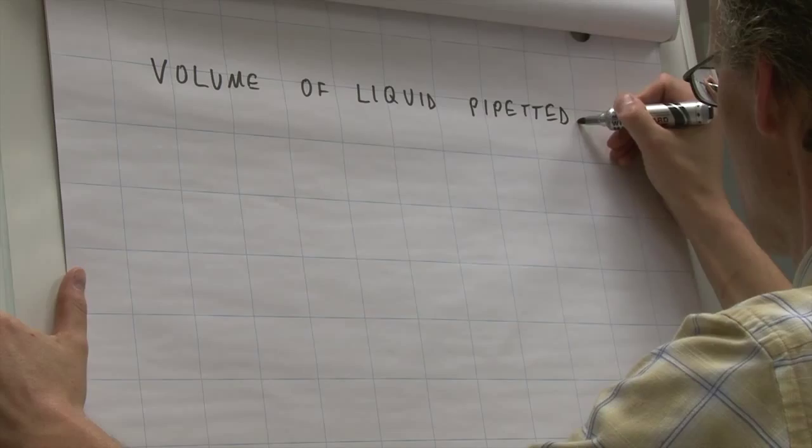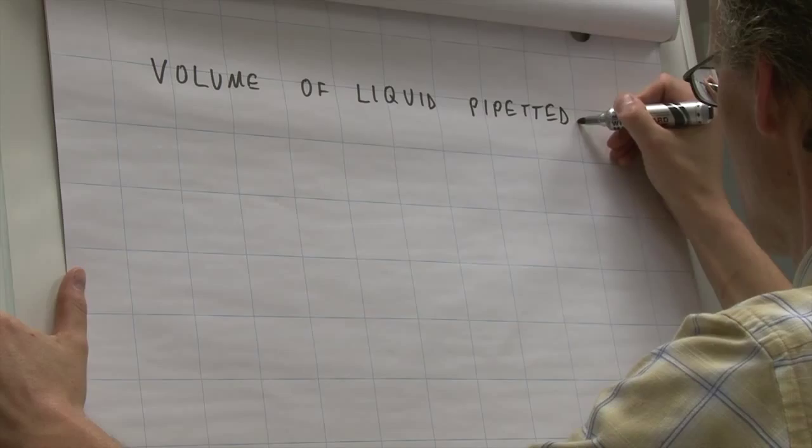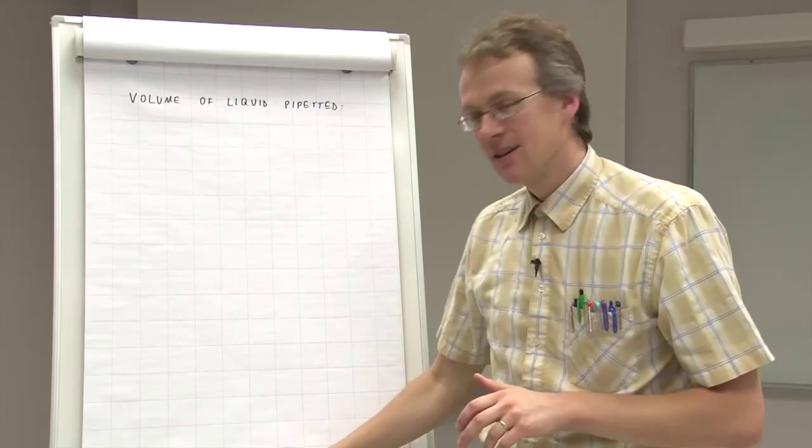So the volume of the liquid that we pipetted, this is our measurement, this is what we measured. We denote it by V.